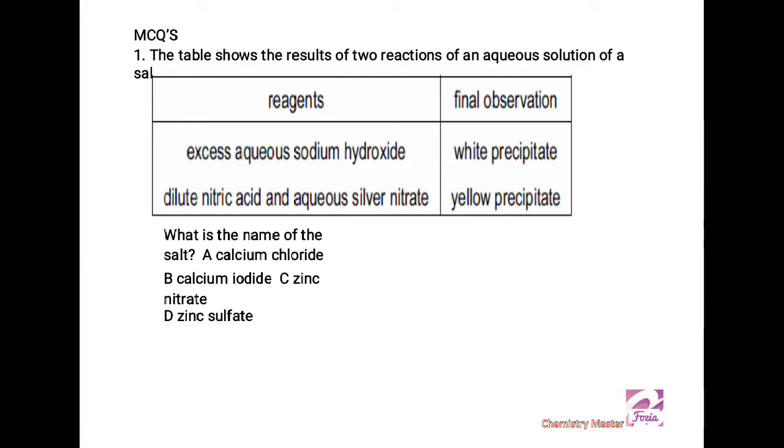Let us begin the discussion. The very first MCQ is: the table shows the results of two reactions of an aqueous solution of a salt. A salt consists of two oppositely charged ions bonded together, so these two reactions are supporting and helping us in the selection of cations and anions of the salt.